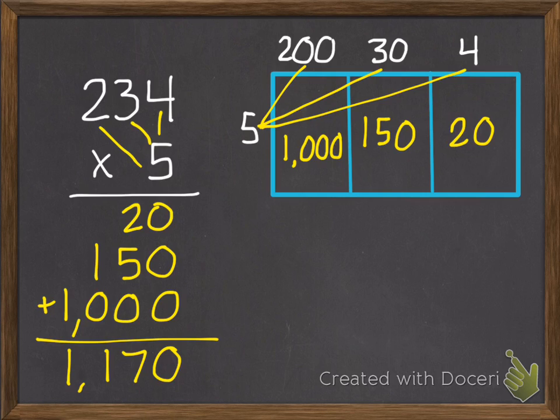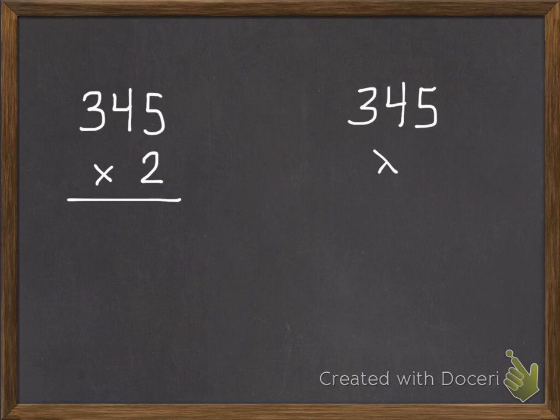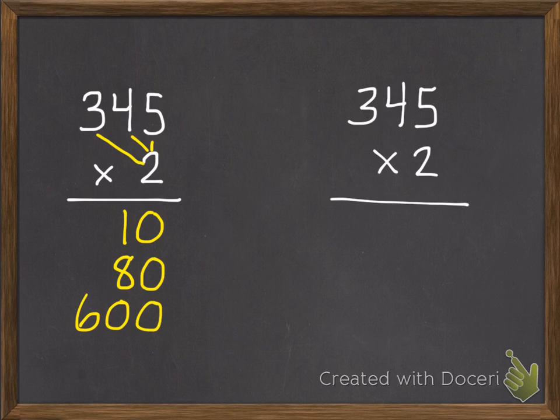So all those same strategies can still help us. I don't want to keep having to draw pictures, though, anymore. Hopefully we're starting to get past that, but we have those in our toolbox if we need them. So I wrote this problem twice. We can break it apart like I just did. Two times five is ten. Two times forty is eighty. Two times three hundred is six hundred. And add them together and get six hundred ninety.